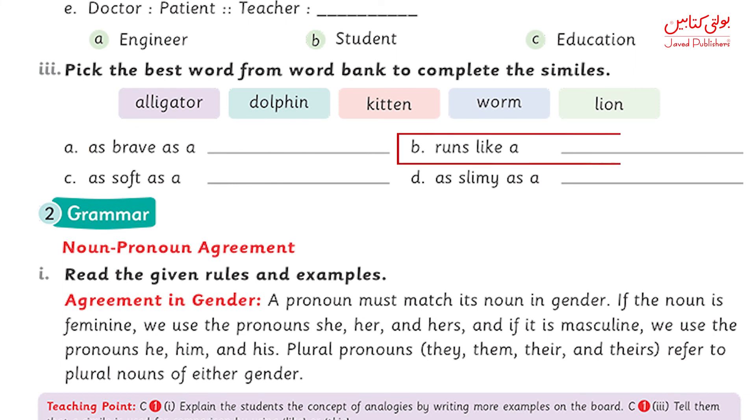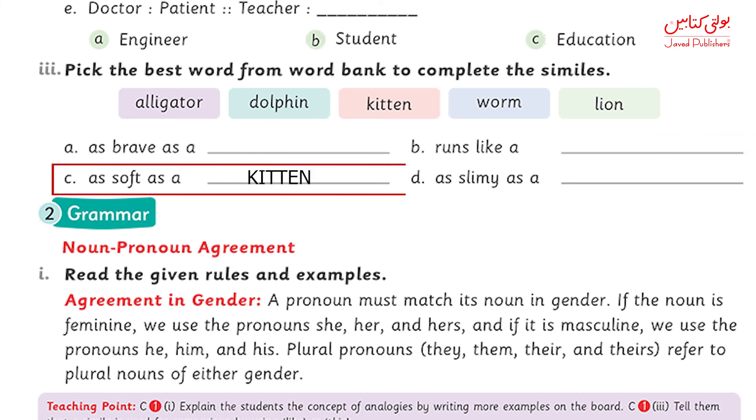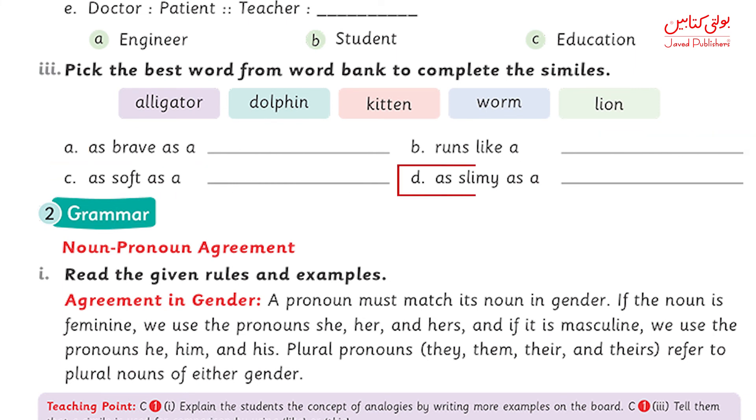More simile examples: as soft as a kitten, as slimy as a worm. Thank you everyone for watching this. Keep practicing and stay connected with Bolti Kitabon.